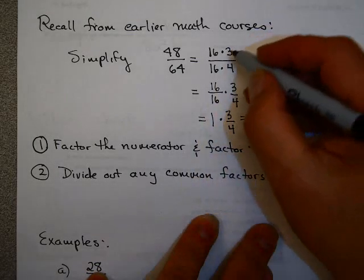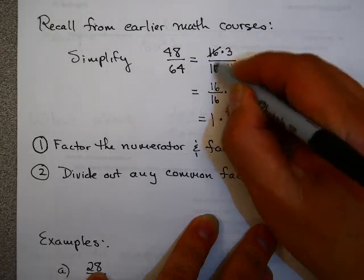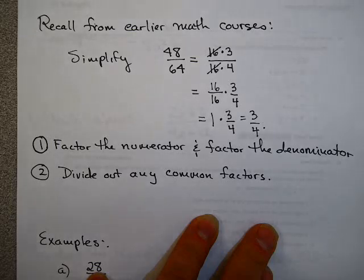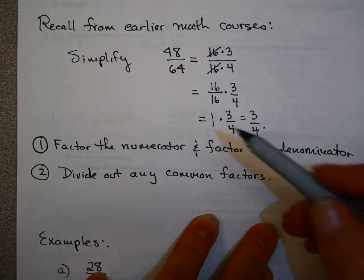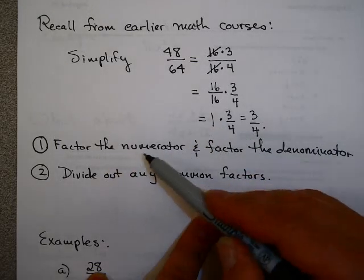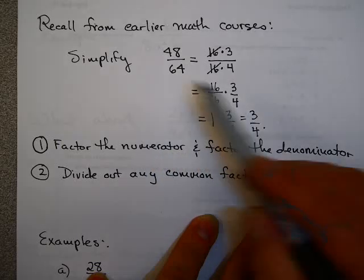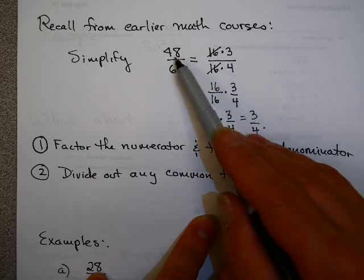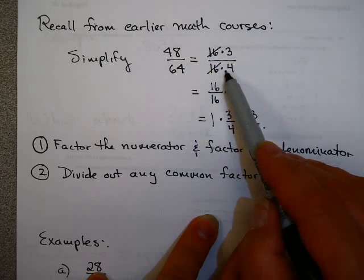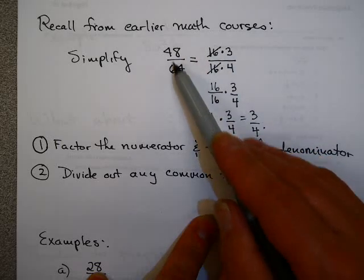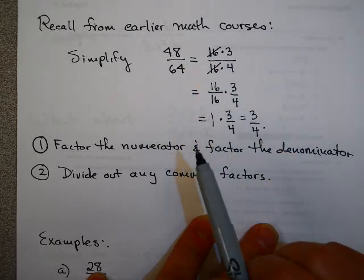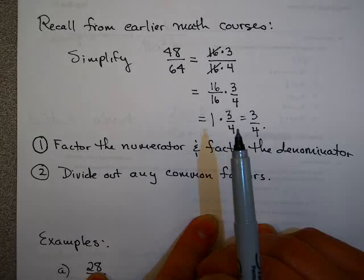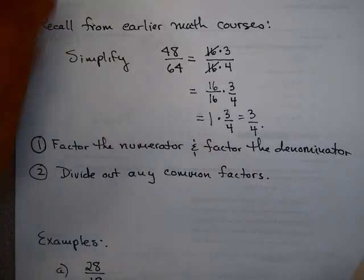As a shortcut, sometimes people would cross these out, indicating you're taking these two steps. Basically what you did mentally: you factored the numerator and factored the denominator of the fraction. Factoring is the opposite of multiplying — I'm breaking this up into two numbers whose product is 48 and two numbers whose product is 64. Then you divided out any common factors. Now let's try some examples.